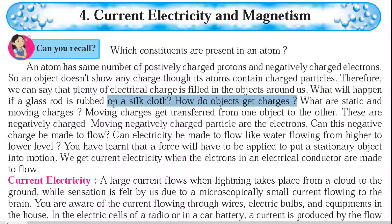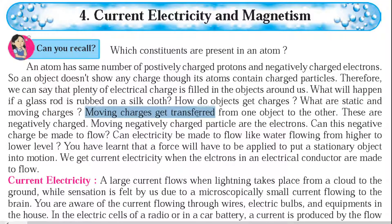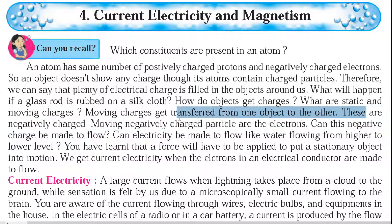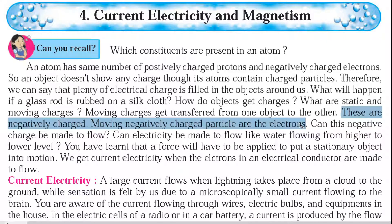What are static and moving charges? Static charge means the positive and negative charges are spread out and separated — the charge is developed. Moving charges means charges are transferred from one object to another. Moving negatively charged particles are the electrons, because they are present in an orbit. Protons are in the nucleus and do not move.